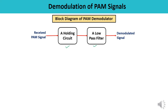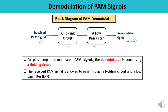In this method, the received PAM signal is the input, and at the output we get the demodulated signal — the original signal XT. So for pulse amplitude modulated signals, demodulation is done using a holding circuit and a low pass filter.